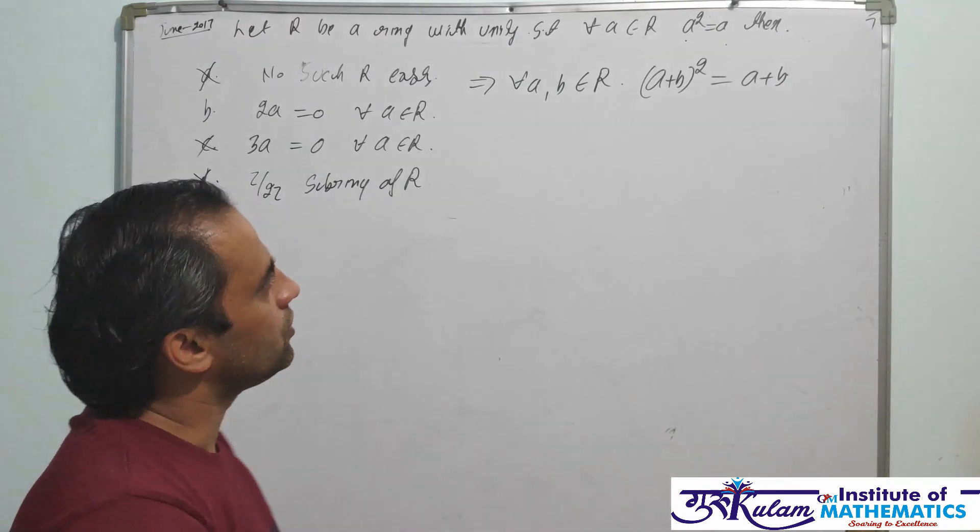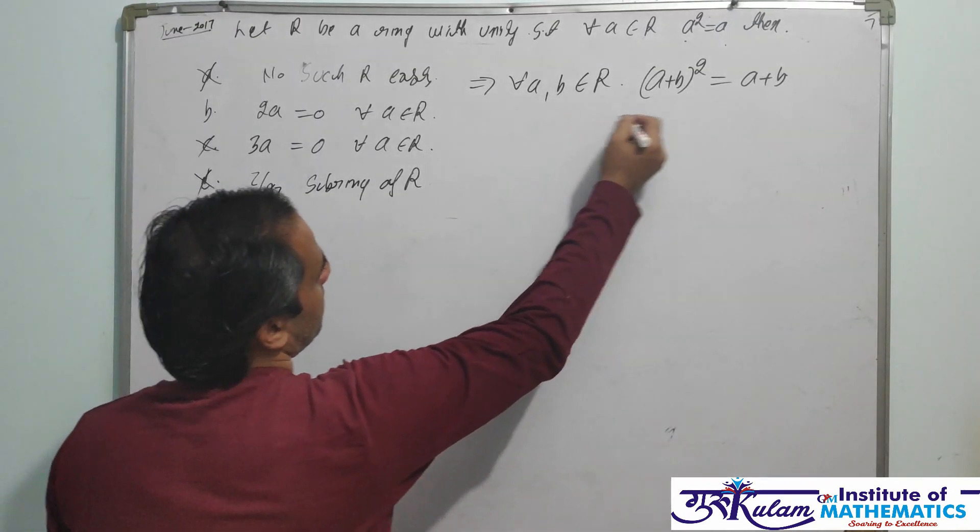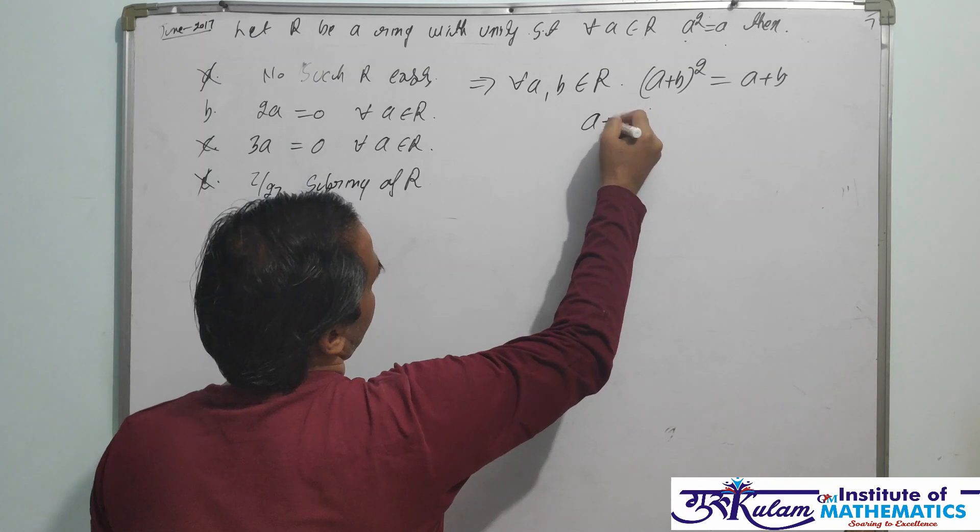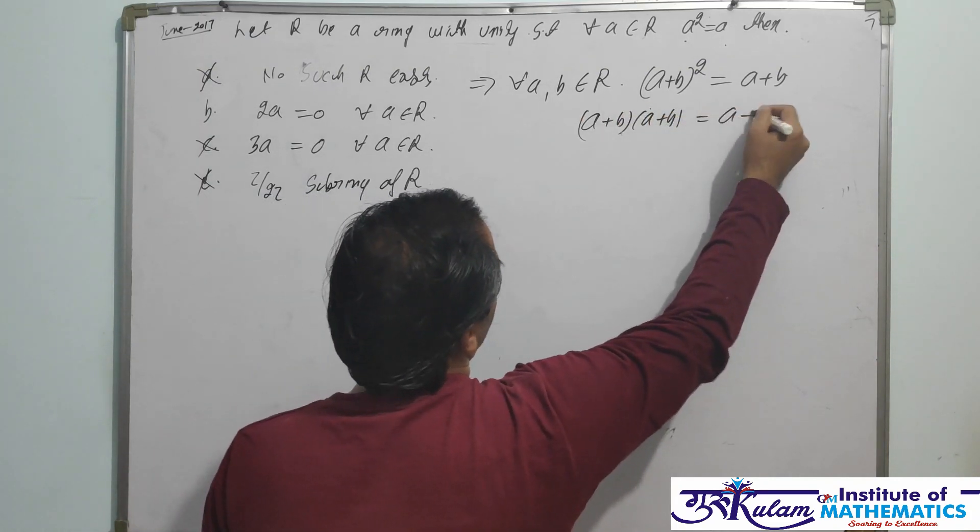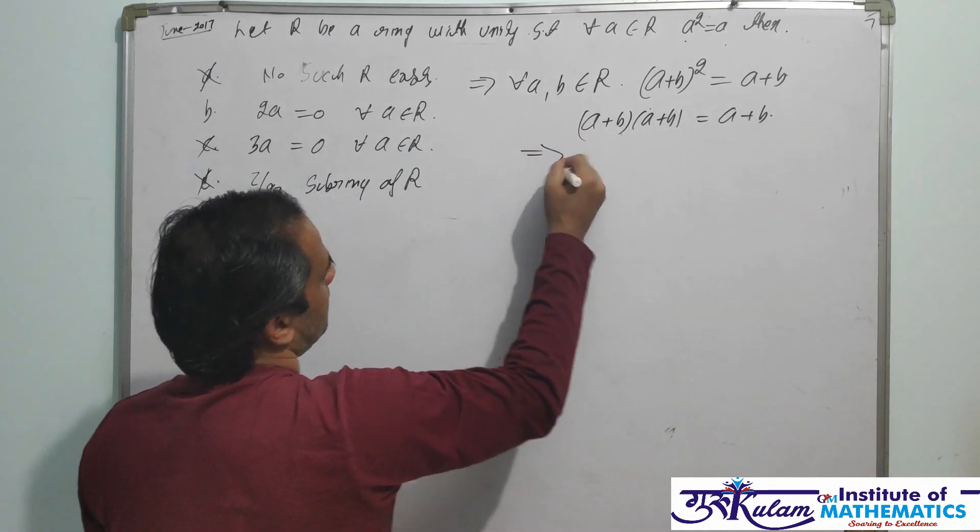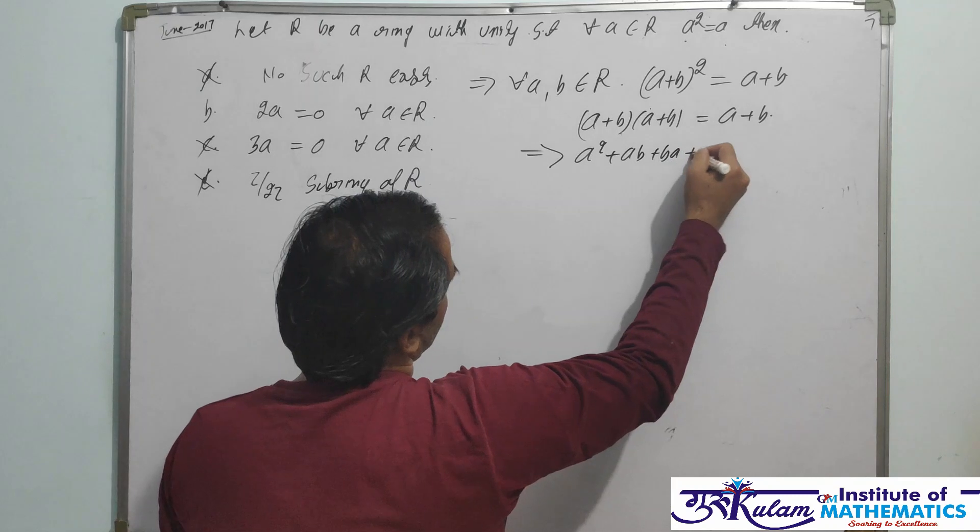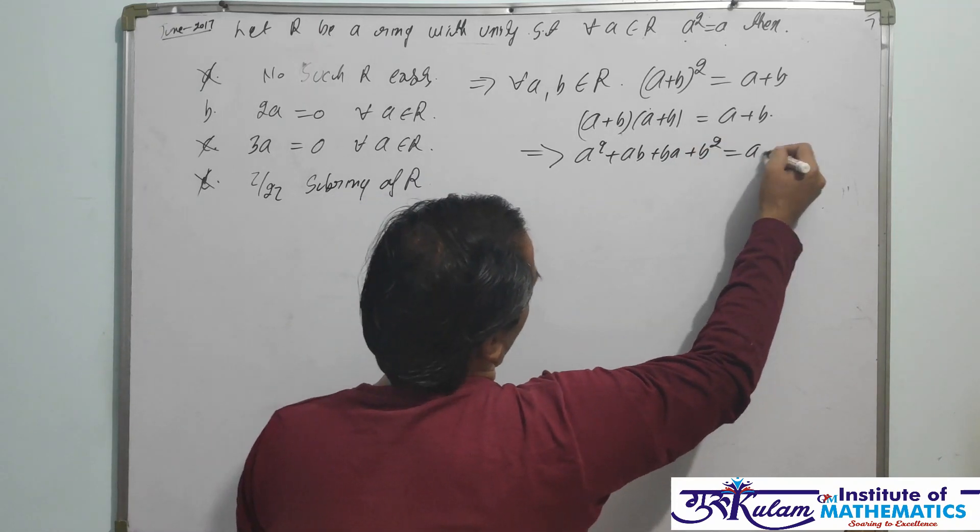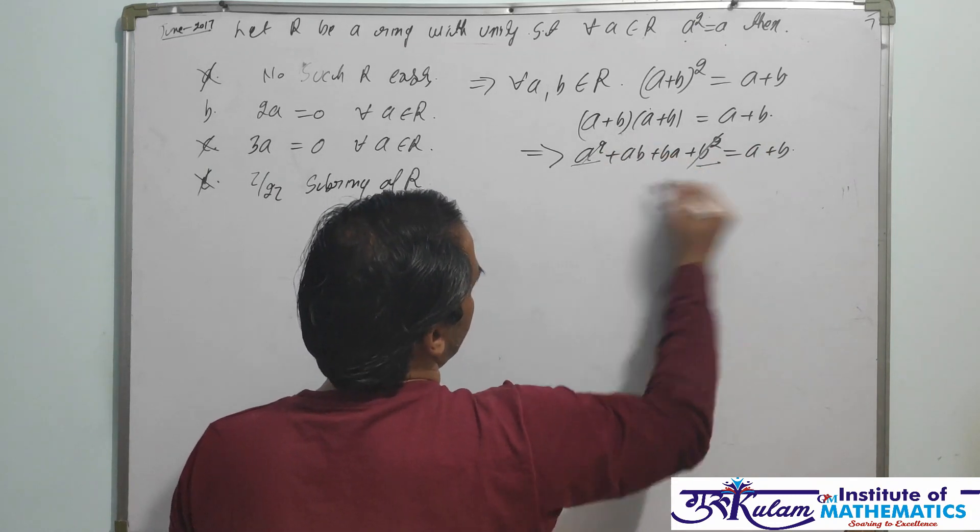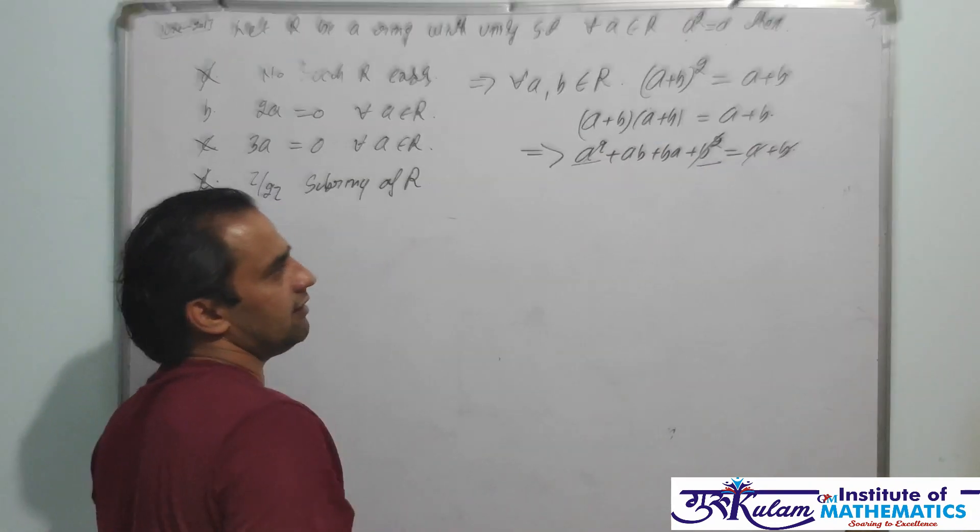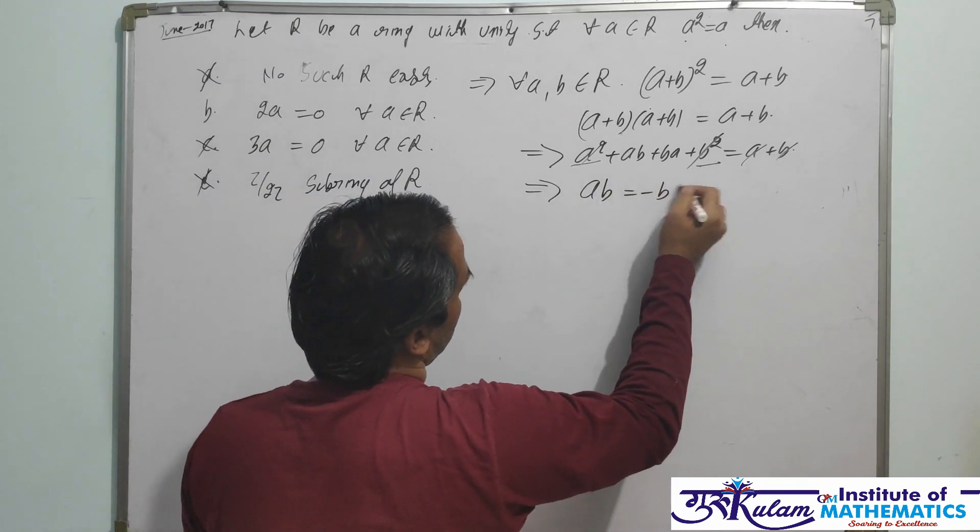Since every element is idempotent, A+B is an element of R. So (A+B)² must equal A+B. This implies (A+B)(A+B) = A+B. This implies A² + AB + BA + B² = A + B. Since A² = A and B² = B, this gets cancelled by cancellation law. This implies AB + BA = 0.